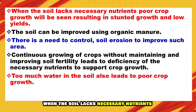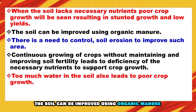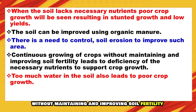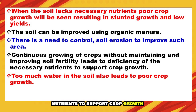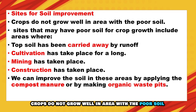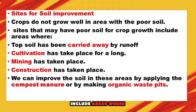When the soil lacks necessary nutrients, poor crop growth will be seen, resulting in stunted growth and low yields. The soil can be improved using organic manure. There is a need to control soil erosion to improve such areas. Continuous growing of crops without maintaining and improving soil fertility leads to deficiency of the necessary nutrients to support crop growth. Too much water in the soil also leads to poor crop growth. Crops do not grow well in areas with poor soil.